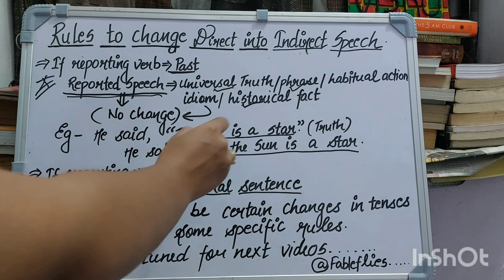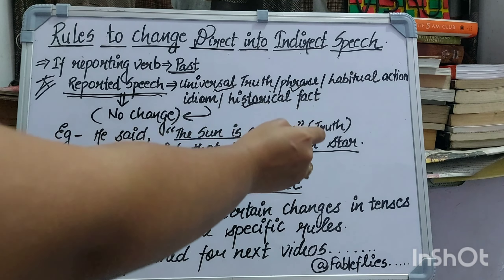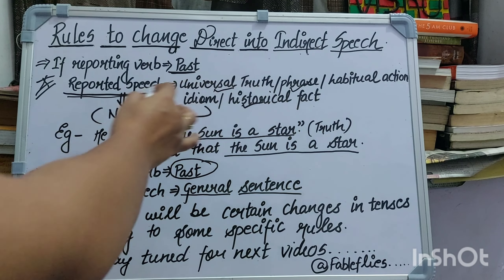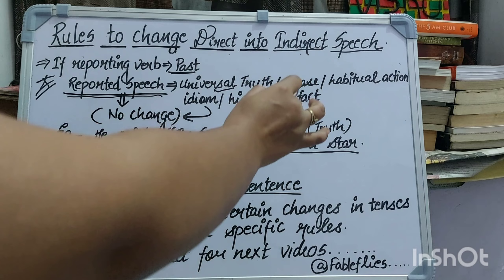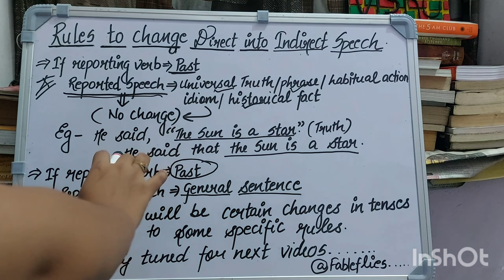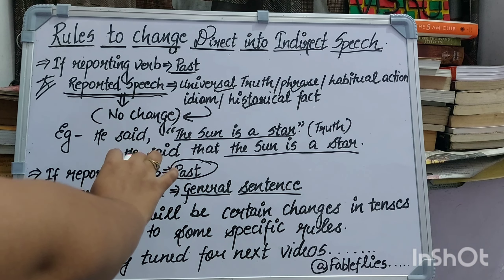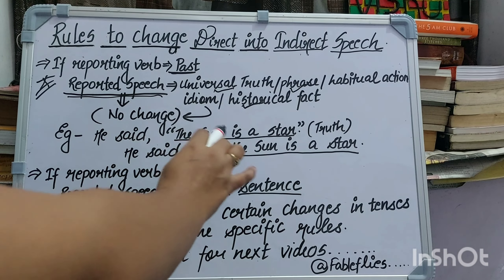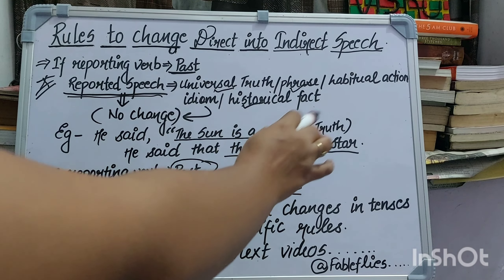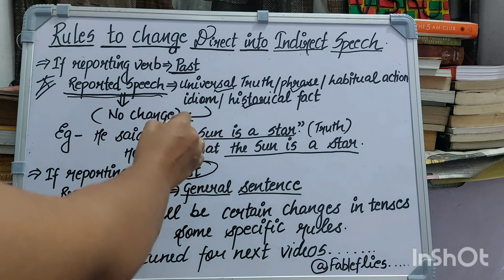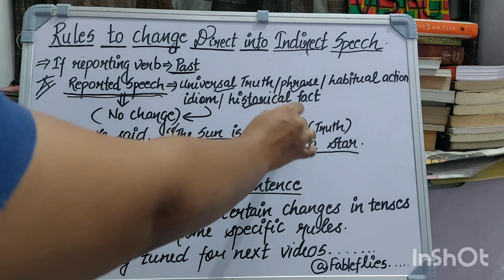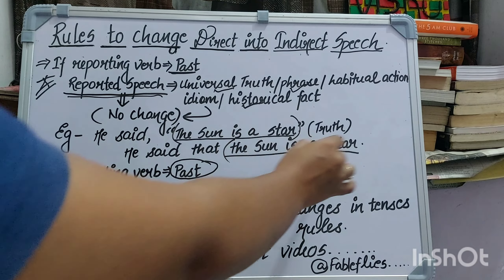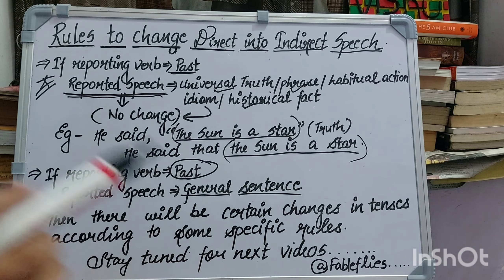For example: he said the sun is a star. What is a universal truth? He said that the sun is a star. Look at that — there is no change in it.